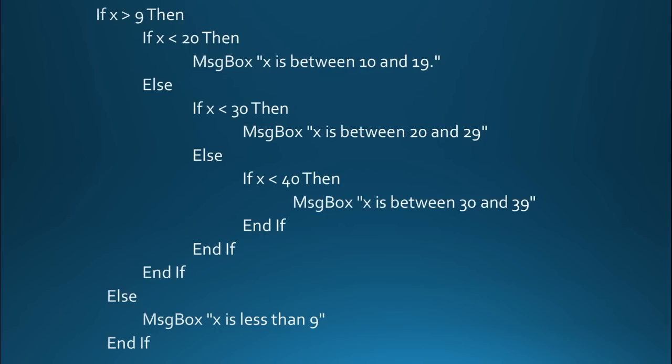Now let's look at what a nested if statement looks like. Pretty scary, huh? You've got a lot going on here. First, we've got an if statement that checks to see if x is greater than 9. If it is, then it drops down to the next if statement, which is saying, well, is it less than 20?